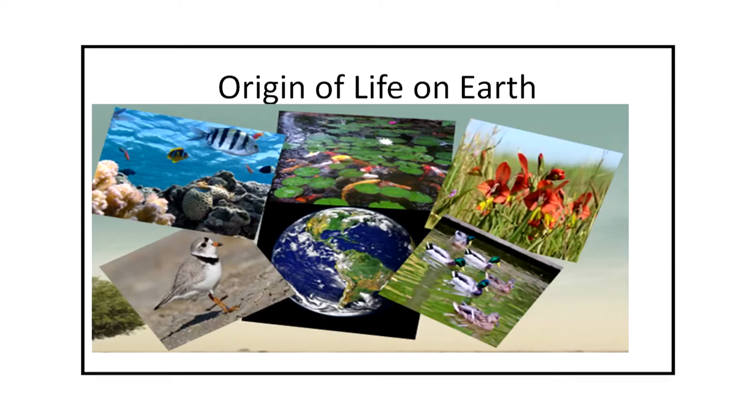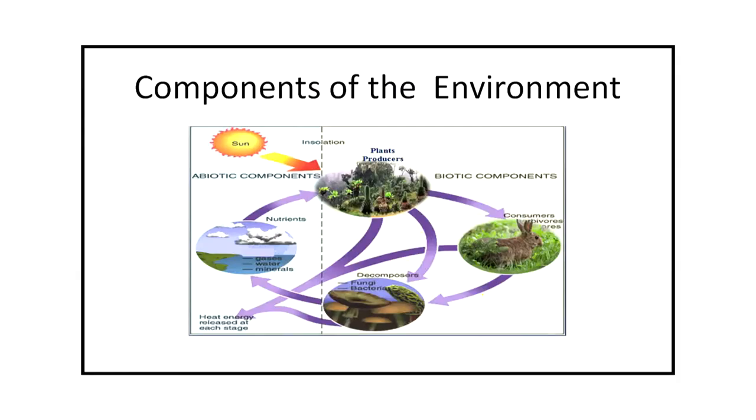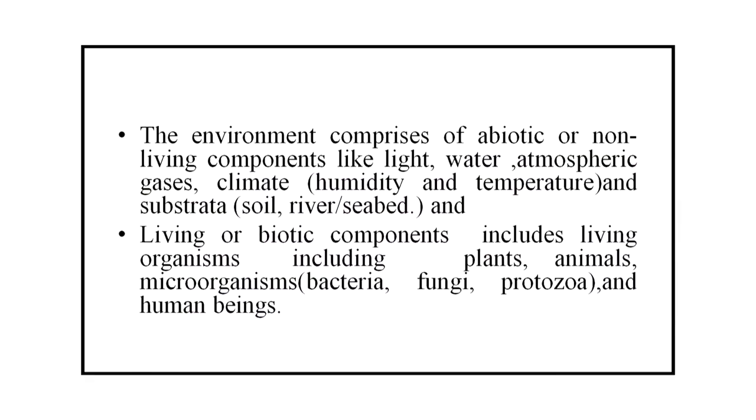Now we will discuss what is environment. Every living organism is constantly interacting with its environment. The environment may be defined as the surroundings or conditions in which an organism lives or operates. The environment comprises of abiotic or non-living components like light, water, atmospheric gases, climate and substrata, and living or biotic components include living organisms—plants, animals, microorganisms and human beings.